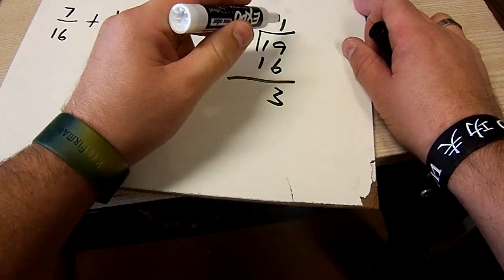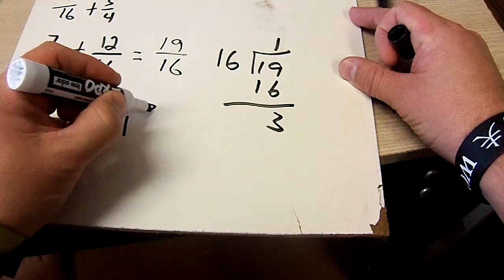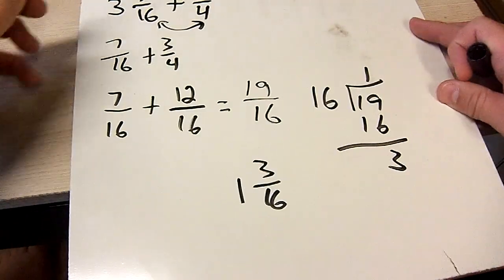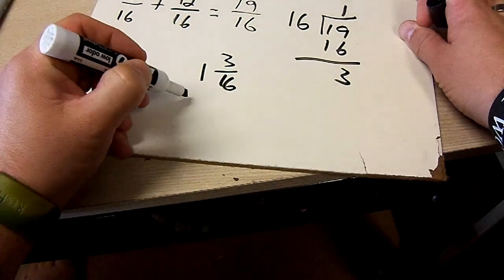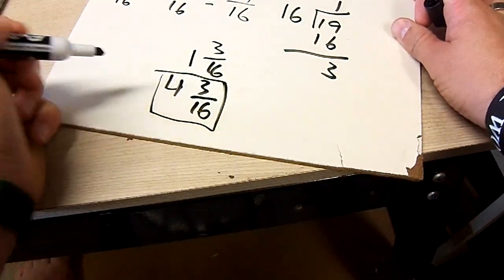Once you get this here, you're going to take that and convert it to 1 and 3 sixteenths. And that's your original 3 up here, and you're going to get 4 and 3 sixteenths. That is your answer.